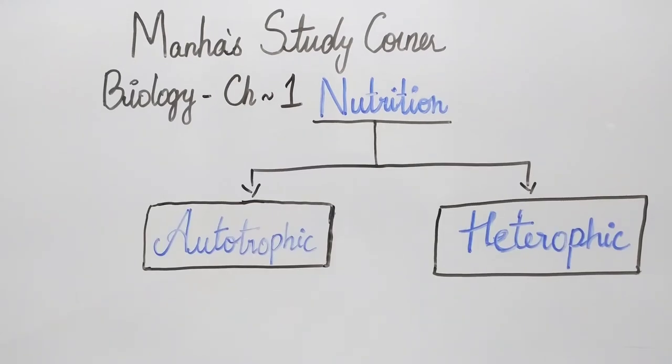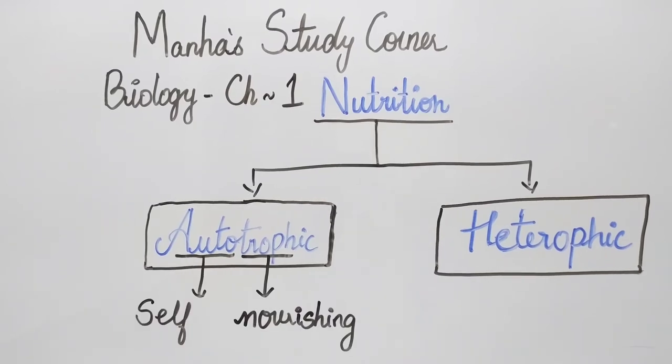In fact, there are two major forms of nutrition: autotrophic mode of nutrition and heterotrophic mode of nutrition.